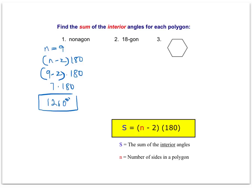An 18-sided figure — once we get above 10, we usually just call it an 18-gon, a 23-gon, etc. We know n equals 18. We're going to plug it into the formula and get 18 minus 2 times 180. Without a calculator, this will be a little more difficult. 16 times 180 is 2,880 degrees.